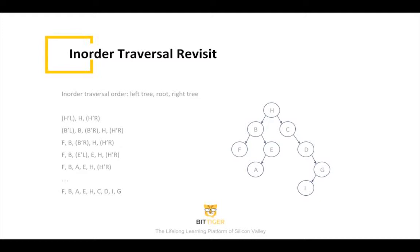Take the previous graph as an example. At the first step, we need to traverse all nodes for H's left tree, then H itself, then H's right tree. At the second step, we take a closer look at H's left subtree and find its root as B. We need to print all nodes in B's left tree, then B, then B's right tree. B's left tree is just F, so put F on the sequence.